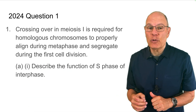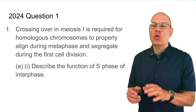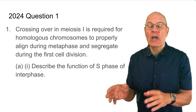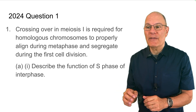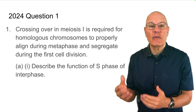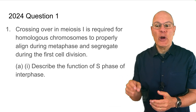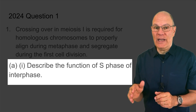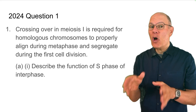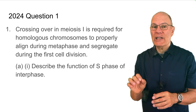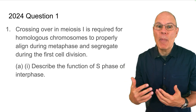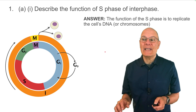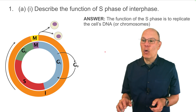Question one starts with this introductory text: crossing over in meiosis one is required for homologous chromosomes to properly align during metaphase and segregate during the first cell division. You're asked to describe the function of S phase of interphase. I suggest you pause the video, write out your answer, and then continue. The answer is that the function of S phase is to replicate the cell's DNA or chromosomes.